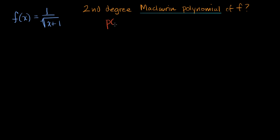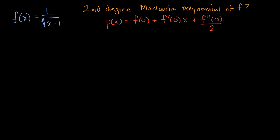So p of x — I'm using p for polynomial — it's going to be f of zero plus f prime of zero times x plus f double prime of zero divided by two factorial, which is really just two. We could think of dividing by one factorial for the first term, and zero factorial for the constant term, but those are both just one. So we have f double prime of zero, the second derivative evaluated at zero, divided by two, times x squared.